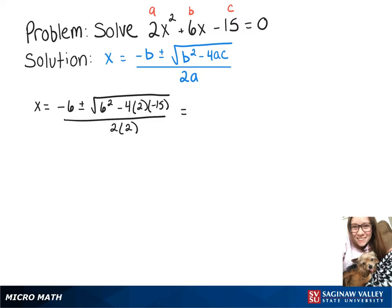Simplifying some of that gives us negative 6 plus or minus the square root of 36 plus 120 over 4.